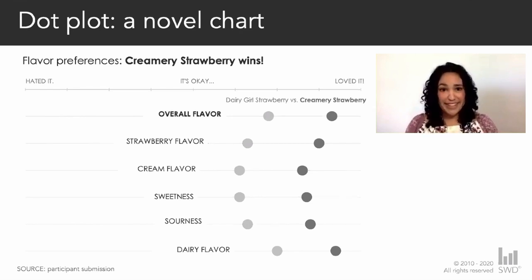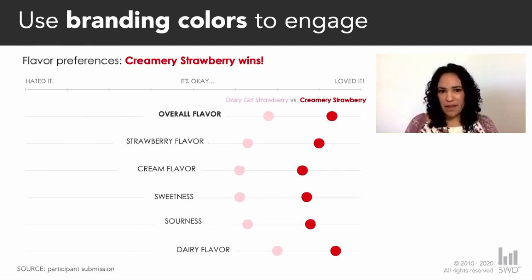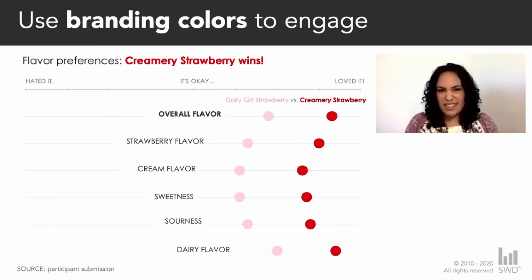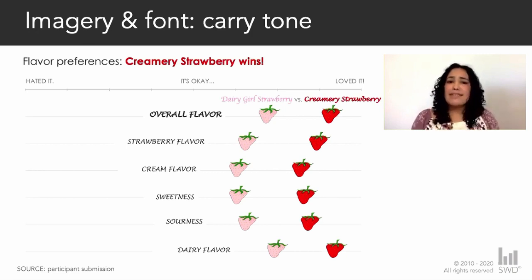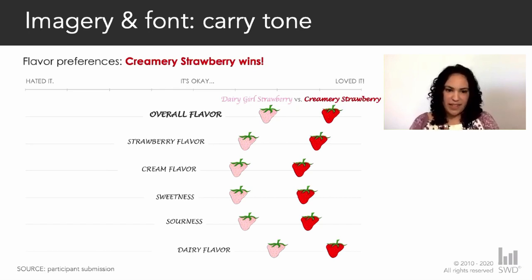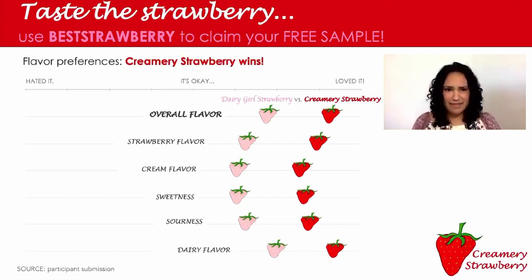I could layer in brand colors, being thoughtful about intensity so consumers focus on Creamery Strawberry. I kept coming back to this idea of incorporating actual strawberries, so I thought: what if instead of using dots, I used berries themselves? So I added some berries and layered in some fonts. And if I'm going to communicate this to my consumers, I'd take it to the next level — using consistent branding, adding a logo, and having a strong call to action so consumers know that Creamery Strawberry has the best flavor and can taste it themselves by claiming their free sample.